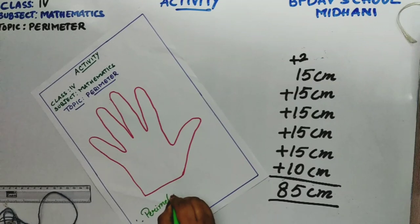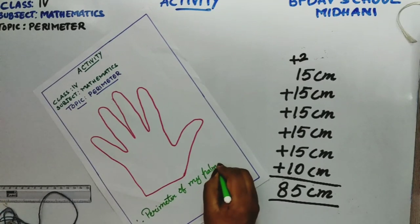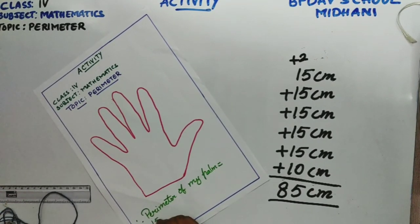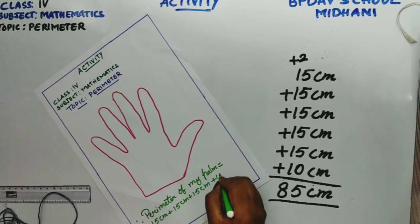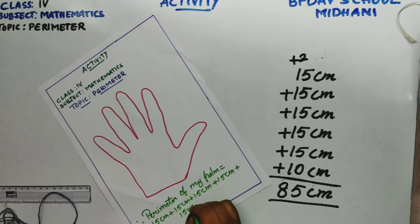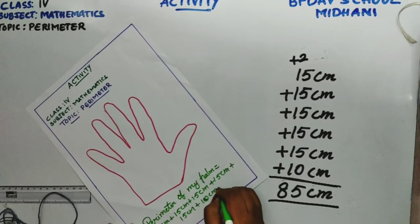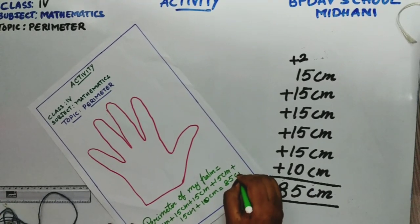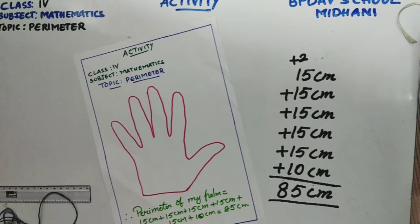The perimeter of my palm is equal to 15 cm + 15 cm + 15 cm + 15 cm + 15 cm + 10 cm, which equals 85 centimeters. This is how you find the perimeter of an irregular closed curved figure. Thank you.